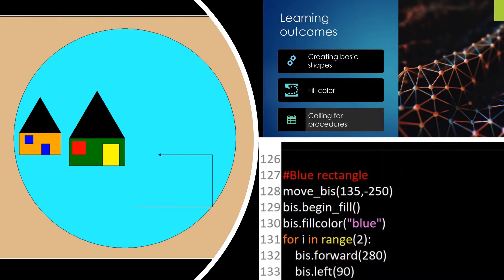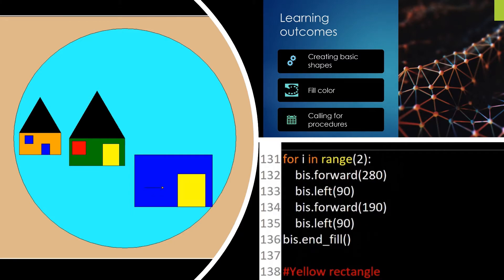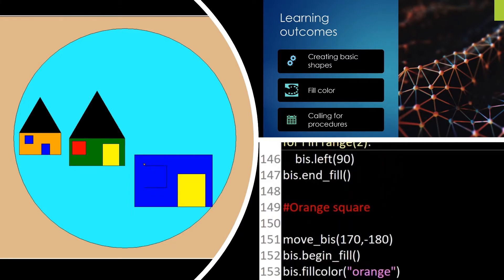You can see the blue rectangle, the yellow rectangle as the door where we have used the for loop, and the orange square, and finally the black triangle. So this way we draw the three sets of houses.